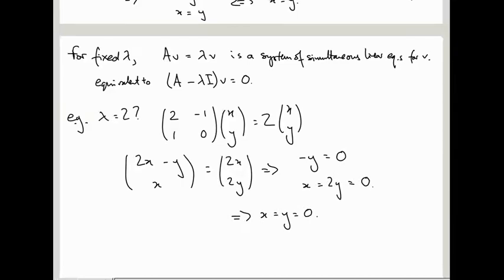So if you try and find an eigenvector (x,y) for the eigenvalue 2, you get just (0,0). So that means 2 is not an eigenvalue of A. The eigenvalues are the ones for which we have non-zero eigenvectors.